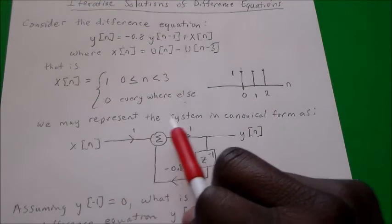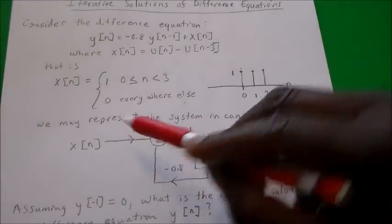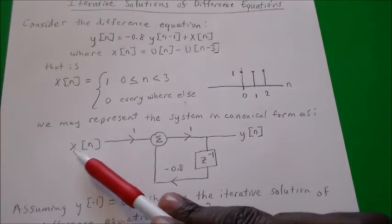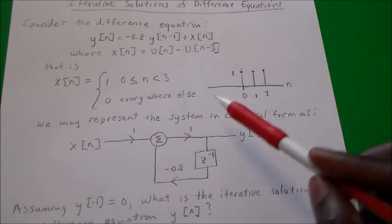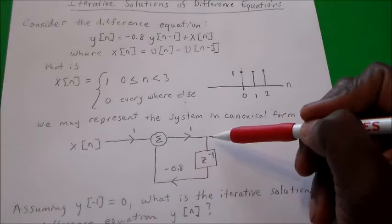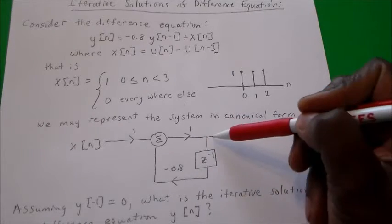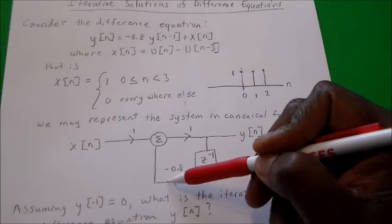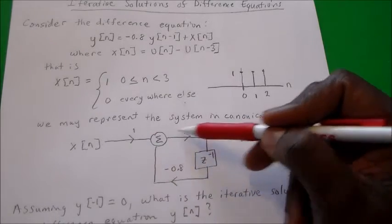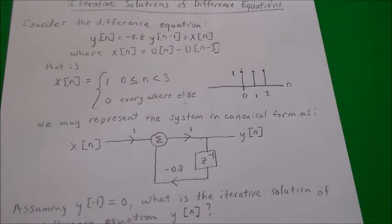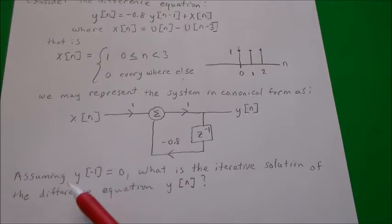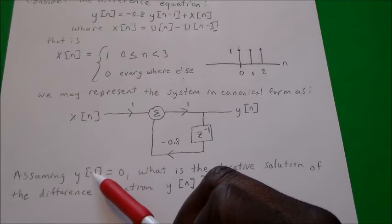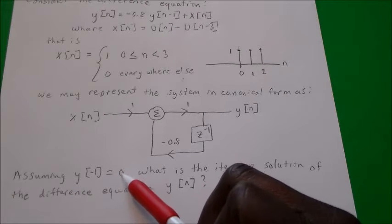We may represent this system in a canonical form. x(n) is multiplied by 1 and goes into a summer, and that's being summed with the output being delayed. That delayed output times -0.8 is summed again with the input and fed back to the output.